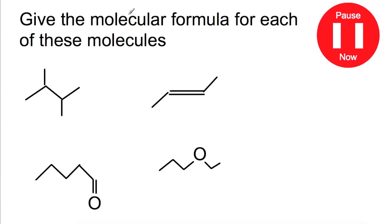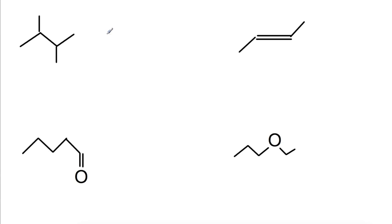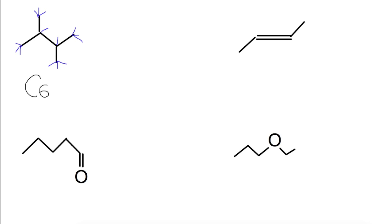Try pausing the video now and giving the molecular formula for each of these molecules. The first molecule is 2,4-dimethylbutane and we're trying to work out how many carbons and hydrogens are present. For each end of chain or corner we have a carbon, giving us six carbons total. Drawing in the hydrogens to make up the four bonds on each carbon, we count fourteen hydrogens, so the molecular formula is C6H14.